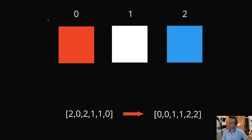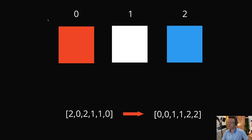In order to understand this problem, it's important that we take a step back and talk about the history of this problem a bit. This problem was invented by a very famous computer scientist called Dijkstra. It's called the Dutch National Flag Problem.